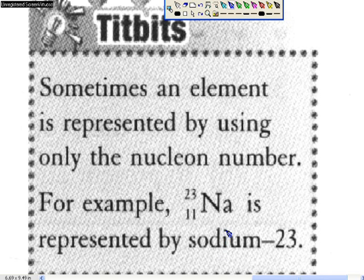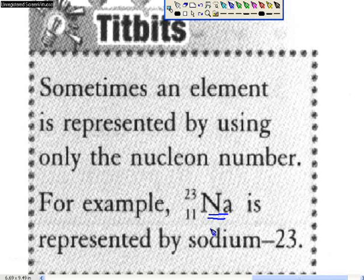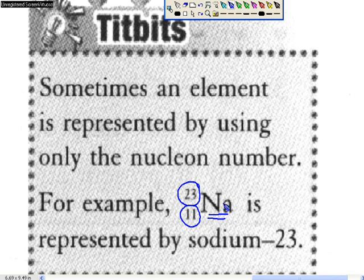Let's look at this example in your book. Na is the symbol for sodium, 23 is the nucleon number, and 11 is the proton number. So the symbol for this atom is Na-23-11. The name for this isotope or atom is written as sodium followed by the nucleon number.